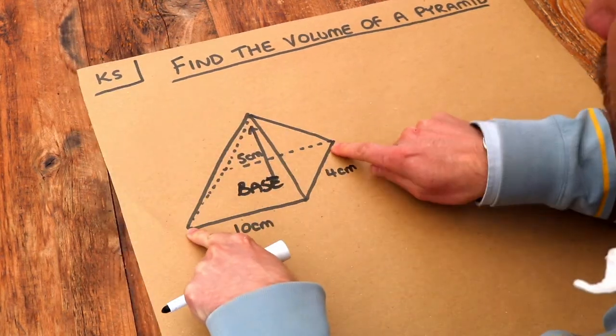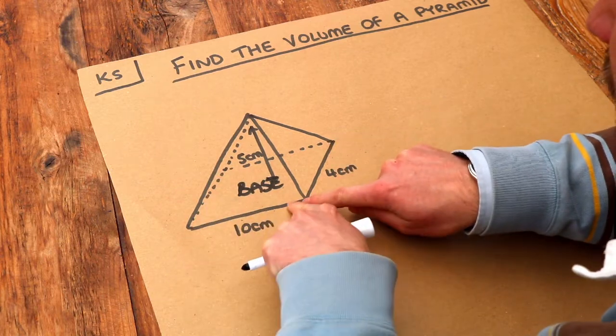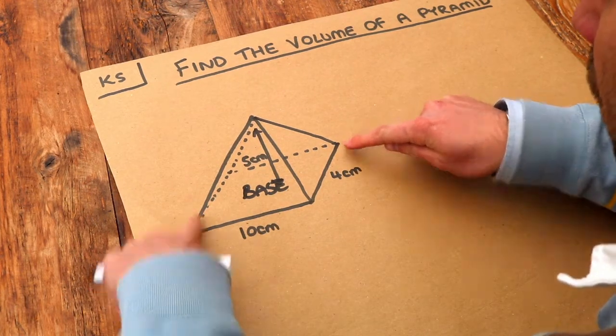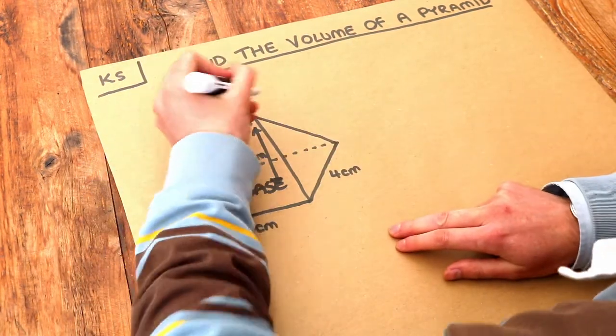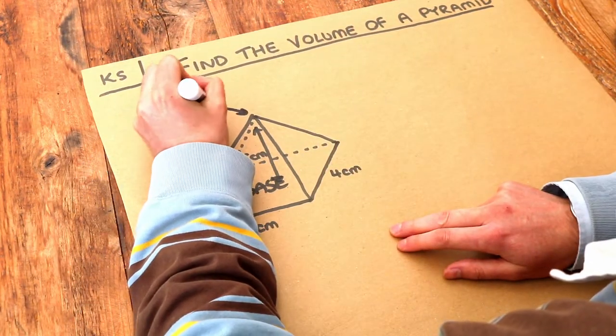And then from each of the vertices of this base, in this case a rectangle, you get lines coming up from all those four vertices to a fixed point at the top which is known as the apex.